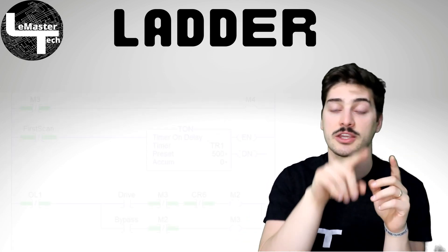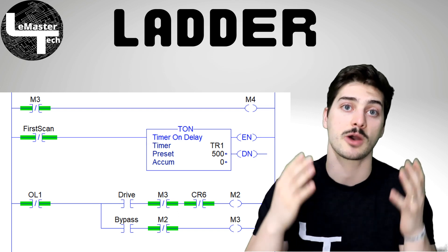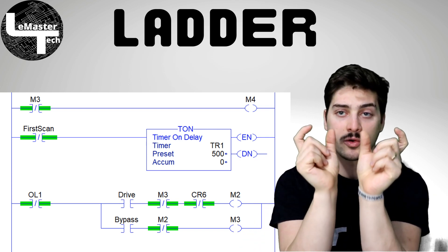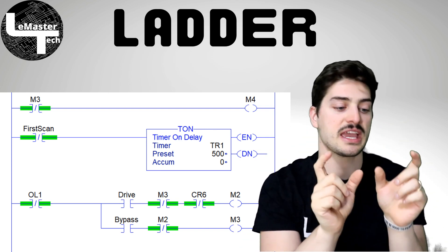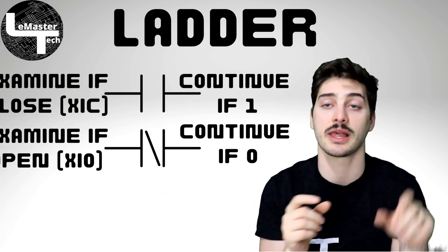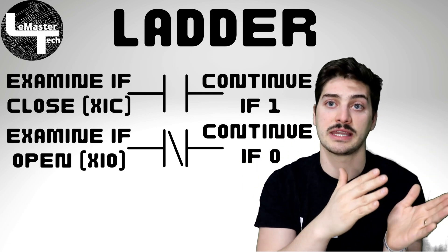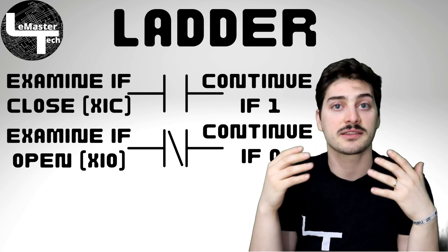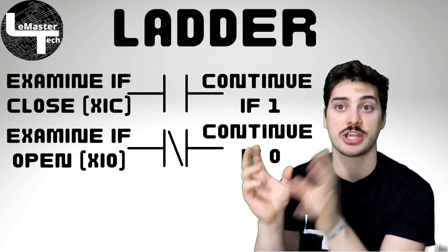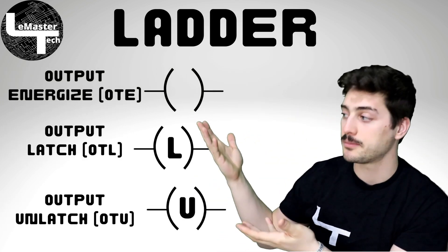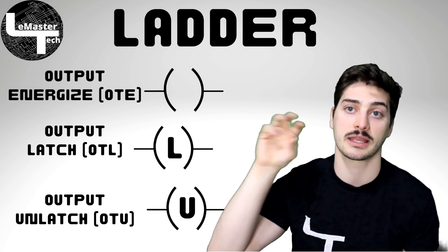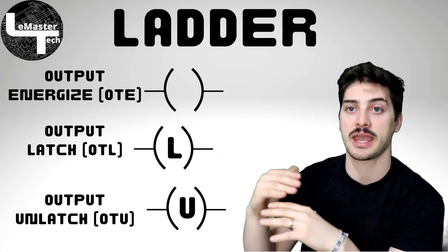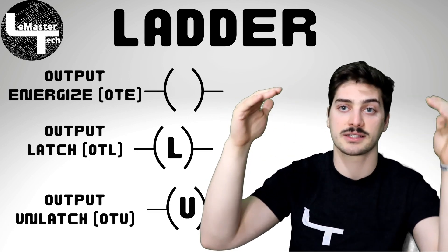In Ladder Logic you can almost trace a flow of electricity through your program, which is why it looks like a ladder — rung after rung. The individual modules come from the relay concept. The two most common instructions are Examine If Closed and Examine If Open, which are basically an IF and an IF NOT — checking if a condition is a one or a zero. To set boolean outputs, you need to know the OTE (energized the whole time the rung is true) versus the OTL and OTU pair, which latch and unlatch a binary condition.